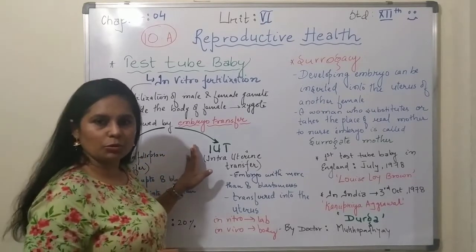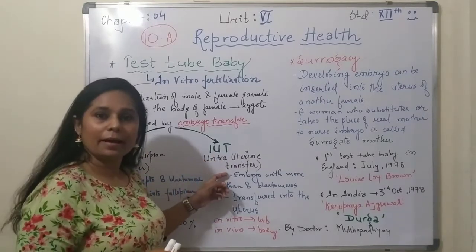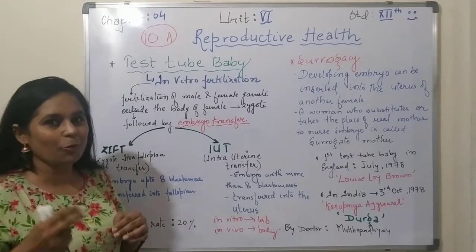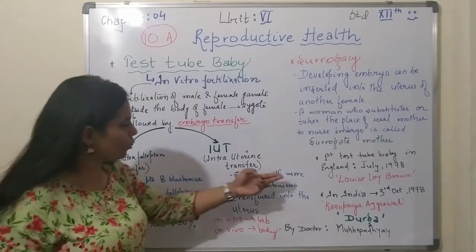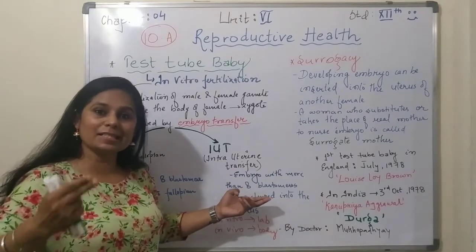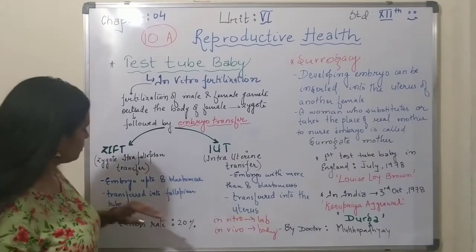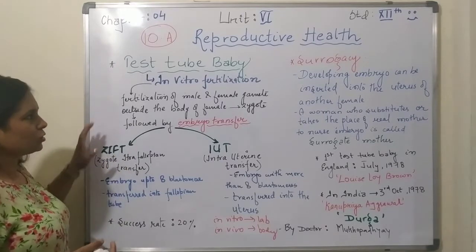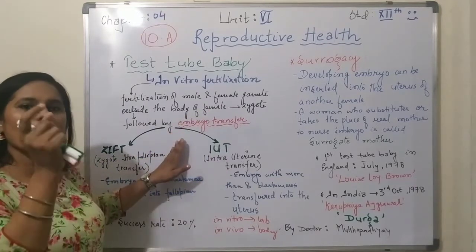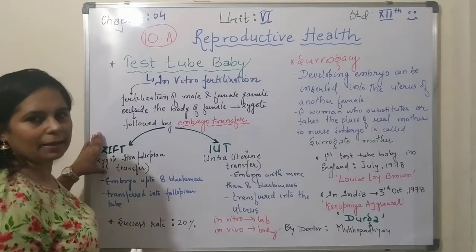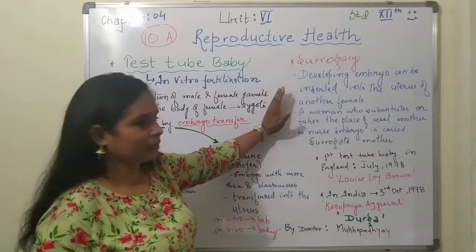The second technique is IUT, which means Intra Uterine Transfer. Here the embryo is transferred to the uterus. The embryo must have more than 8 blastomeres — more than 8 cells — and then it will be transferred to the uterus. So ZIFT uses the fallopian tube and IUT uses the uterus. Based on the stage and location of transfer, these two different names are given.